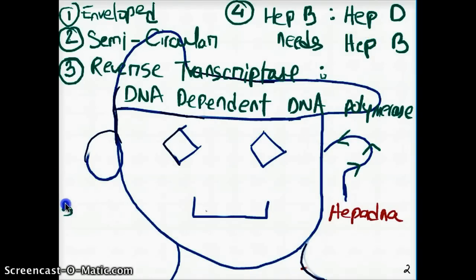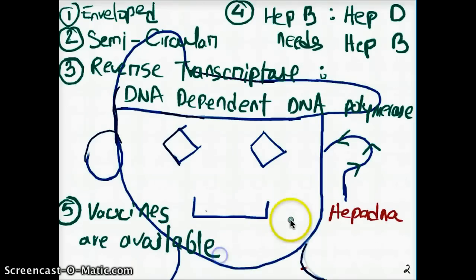Point number five is that these hepadnaviruses have vaccines that are being made from it. Vaccines are available. And it can cause cirrhosis of the liver. That's it. That's all about hepatitis B.